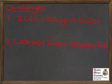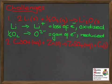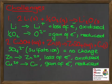Here's a couple of redox reactions for you to try. For each one, decide what has been oxidized and what has been reduced. For the first one: lithium metal goes to Li⁺ ions — loss of electrons, it's been oxidized. Oxygen goes to oxide O²⁻ ions — gain of electrons, it's been reduced. For the second one: the sulfate ion SO₄²⁻ is the spectator and doesn't change. Zinc metal goes to Zn²⁺ ion — loss of electrons, oxidized. The Cu²⁺ ion in copper sulfate goes to copper metal — gain of electrons, reduction.